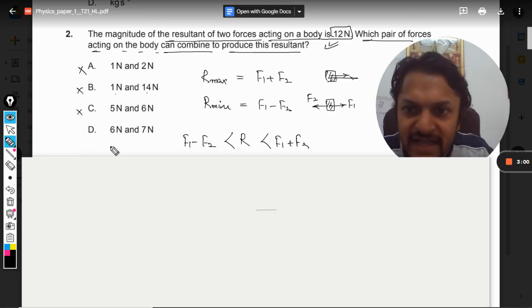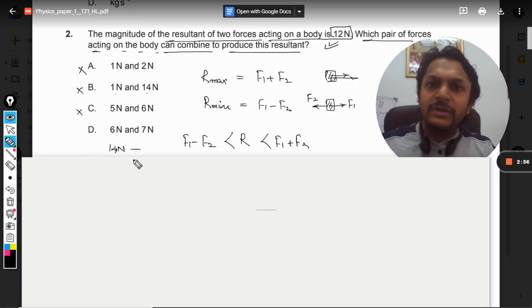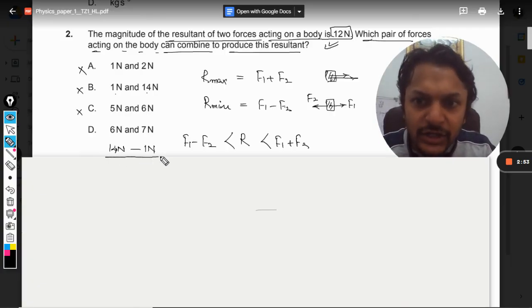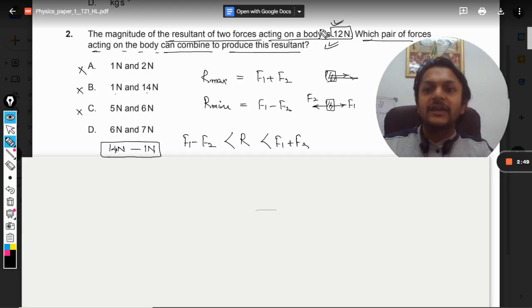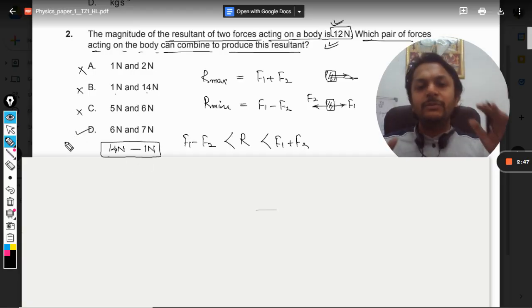And when we talk about D, the maximum value is 7 plus 6, that is 13N. And the minimum value will be 7 minus 6, that is 1N. So this is the range in which the 12N is lying. So our answer will be D.